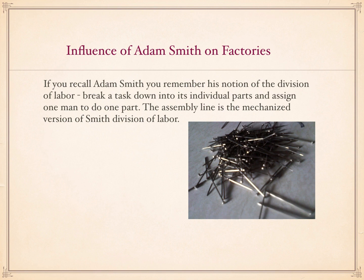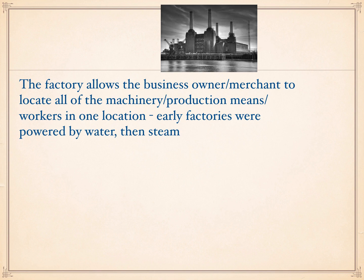The assembly line is basically the mechanized version of Smith's division of labor. If you put these workers in one location with all the products and all the means of production, you have a factory. The factory allows the business owner or merchant to locate all of the machinery, production means, and workers in one location. Early factories were powered by water and then steam. One of the drawbacks of the factory is that it does require a lot of investment capital on the part of the merchant, the owner.